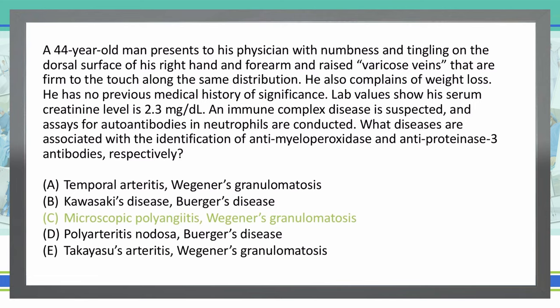C is the correct answer because Berger's disease is not associated with anti-proteinase 3 antibodies. Our P-ANCA is the perinuclear pattern associated with the antineutrophil cytoplasmic antibody — that's what the P in P-ANCA stands for — and that corresponds to microscopic polyangiitis.